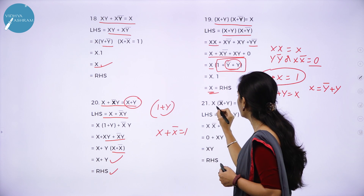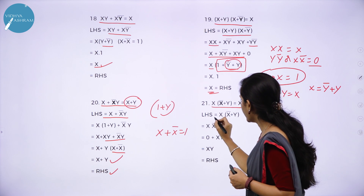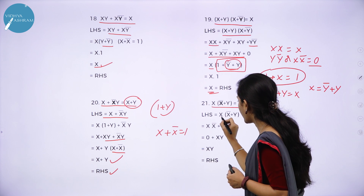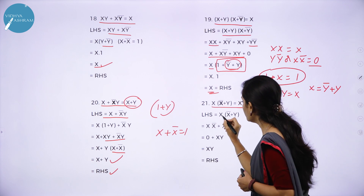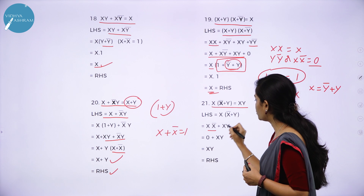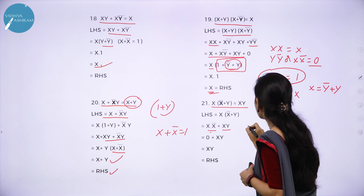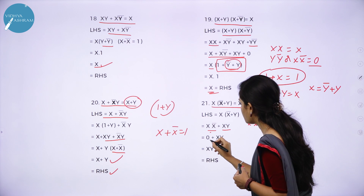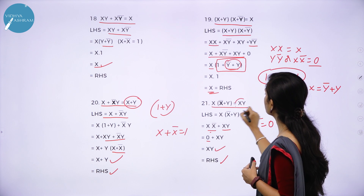Our last theorem is x(x̅ + y) = xy. Taking LHS: x(x̅ + y). Multiply out: x·x̅ + x·y. Since x·x̅ = 0, in place of x·x̅ write 0. So 0 + xy = xy, which is your RHS value.